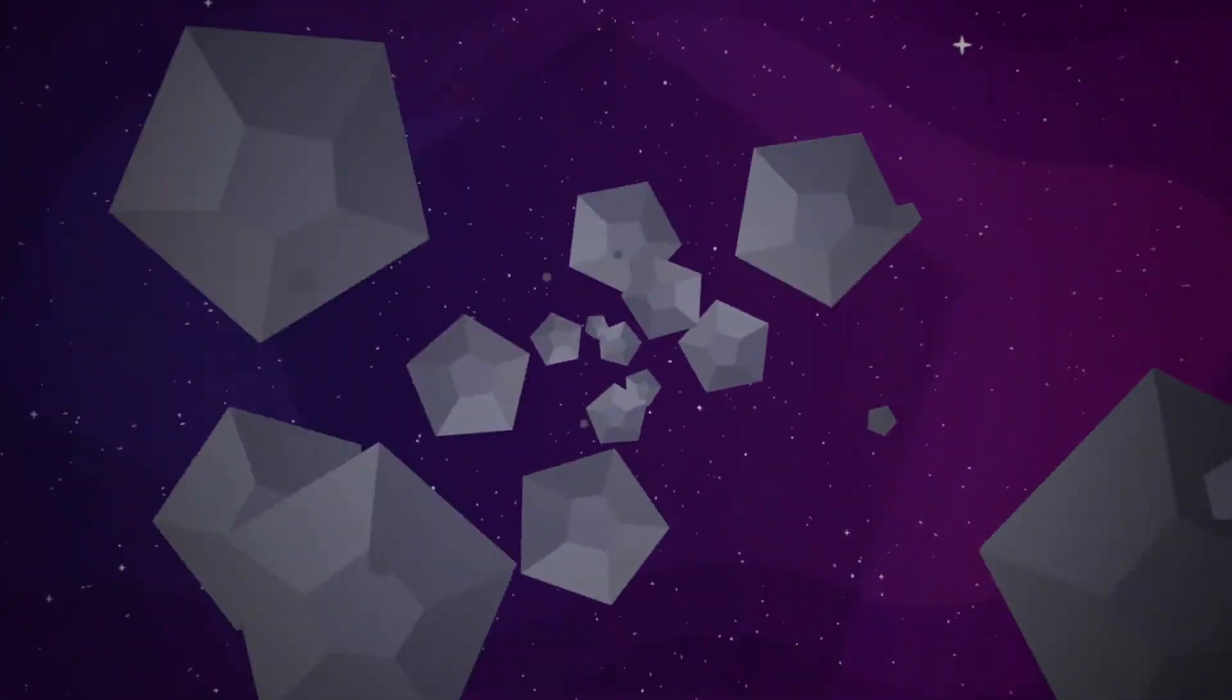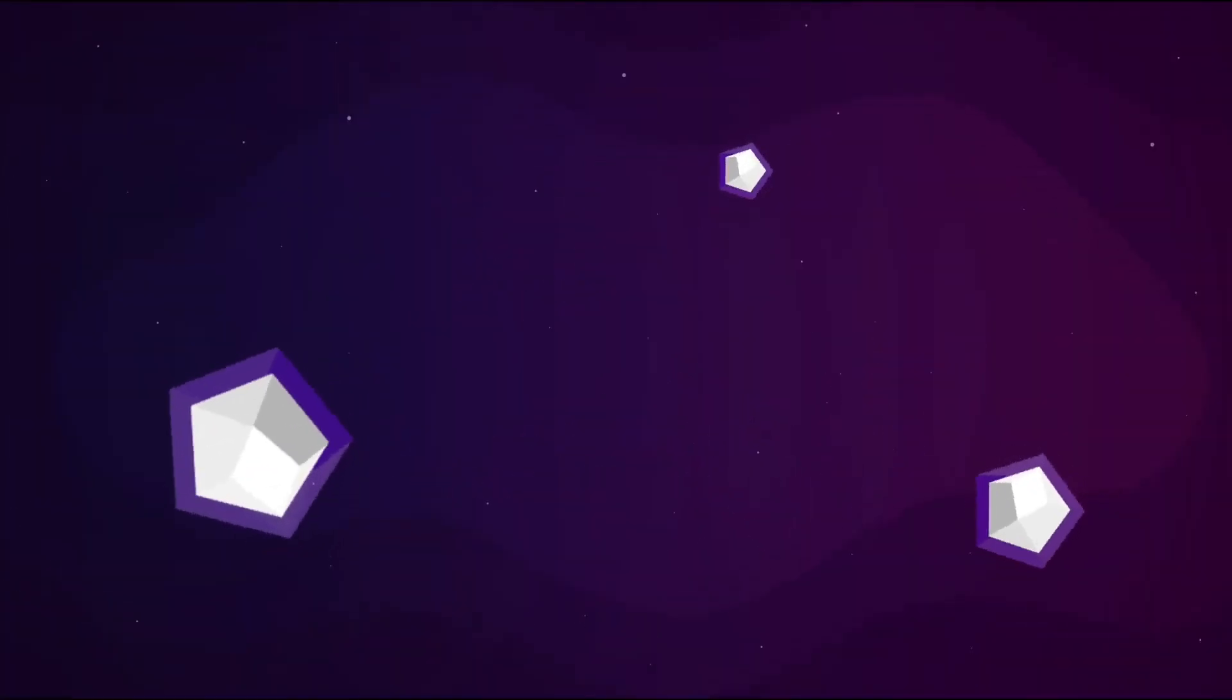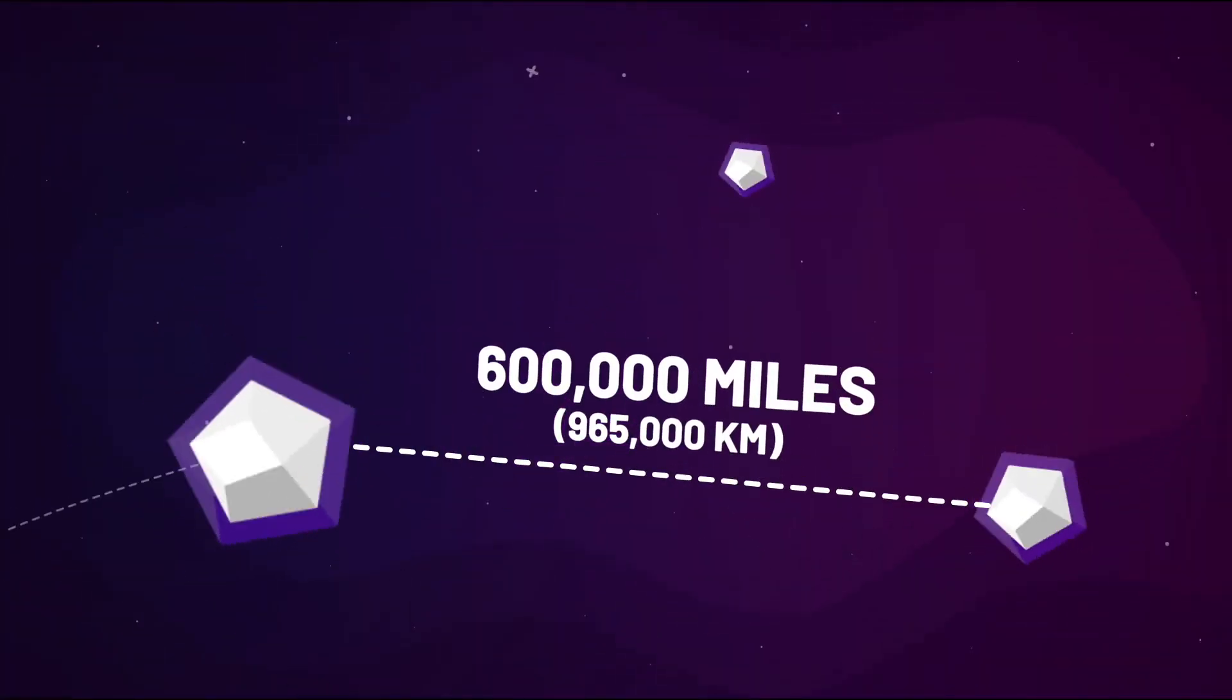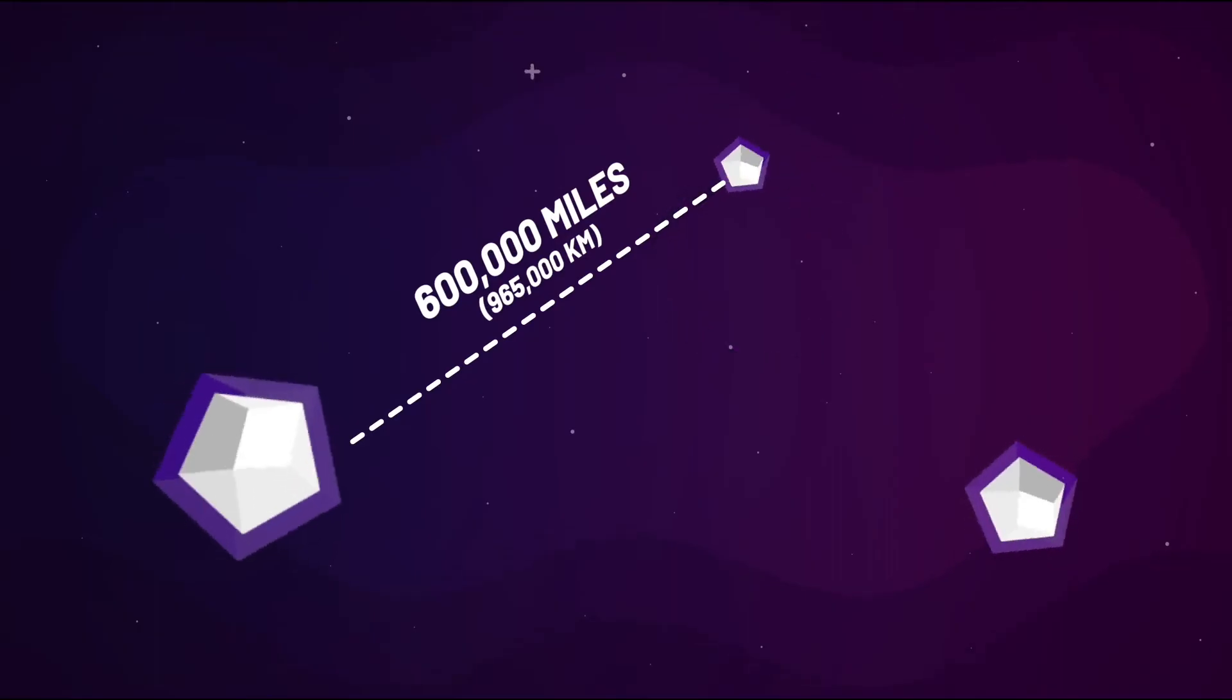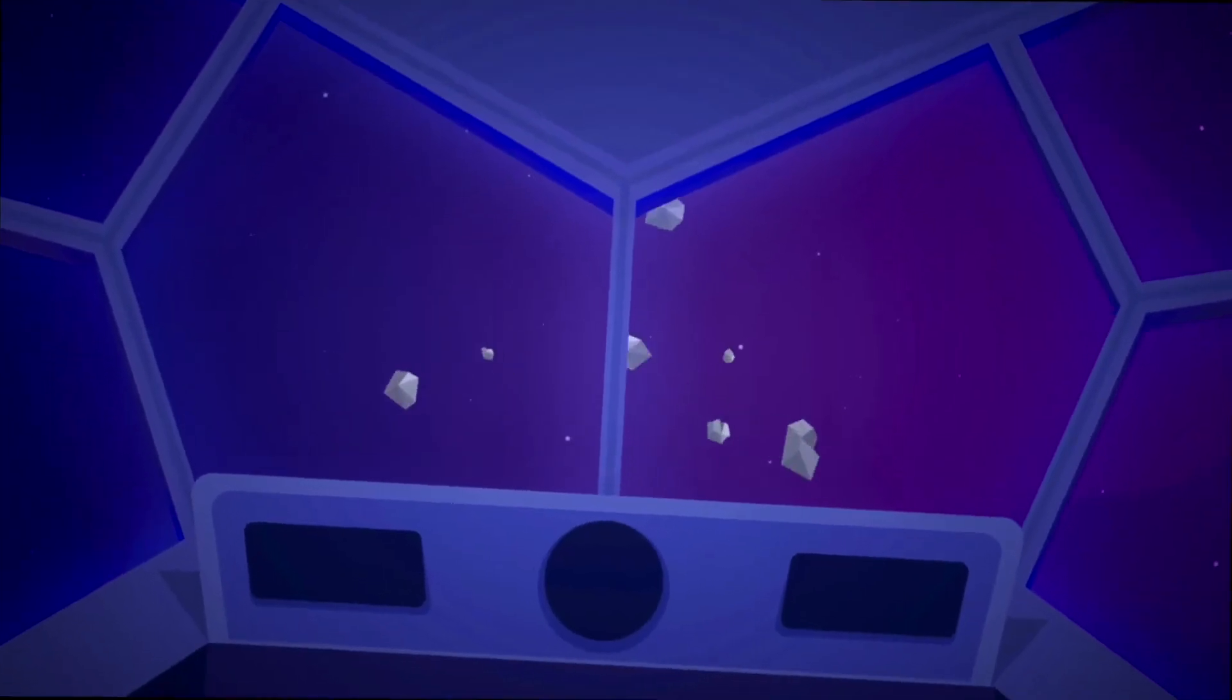And despite there being several million asteroids in the belt, our solar system is thankfully very vast, which allows for an average of 600,000 miles of space between asteroids. This half a million miles of space allows us to comfortably travel across the asteroid belt without the risk of collision.